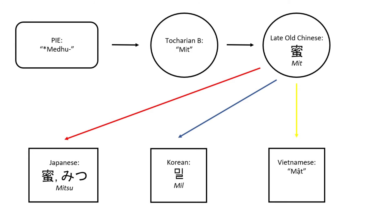I knew going into writing the script that mead and meth were related, but what I didn't know is a second Proto-Indo-European word web. Medu, from the Proto-Indo-European, came into Tocharian — an extinct Indo-European language that was spoken in West China in the 5th through the 8th centuries AD — as the word meaning honey. I will discuss the language and history of the Tocharian peoples and culture in its own video — it goes deep. But for now, this influenced late Old Chinese and became the word for honey. This also led to the Japanese mitsu — and here I have the kanji and the hiragana — the Korean 'mil,' and the Vietnamese 'mật,' all three meaning honey.